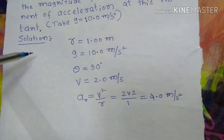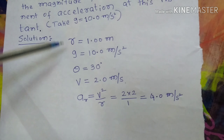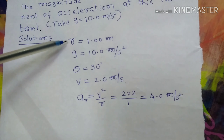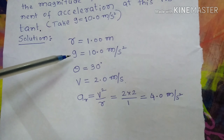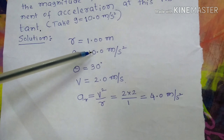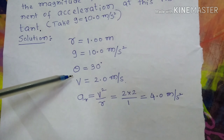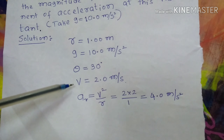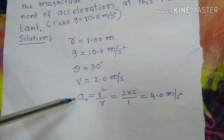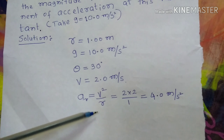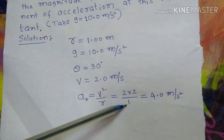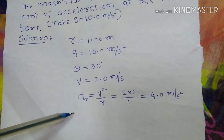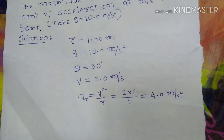The solution: first write the given information. The length of the string, which is the radius, r equals 1 meter. Acceleration due to gravity g equals 10 meters per second squared. Theta equals 30 degrees. Speed v equals 2 meters per second. Radial acceleration formula: Ar equals v-squared by r. Substituting: 2 times 2 divided by 1 equals 4 meters per second squared. This is the radial acceleration.